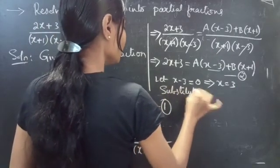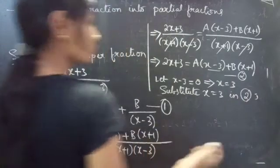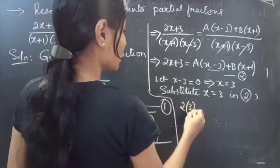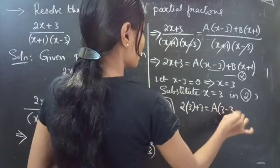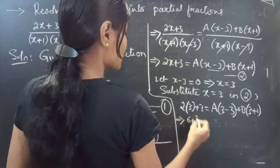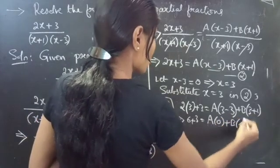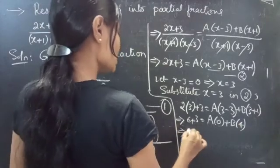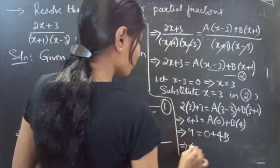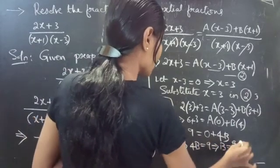Substituting x equals 3 in equation 2: 2(3) plus 3 equals A into 3 minus 3 plus B into 3 plus 1. That gives 9 equals A into 0 plus 4B. So 4B equals 9, therefore B equals 9 by 4.